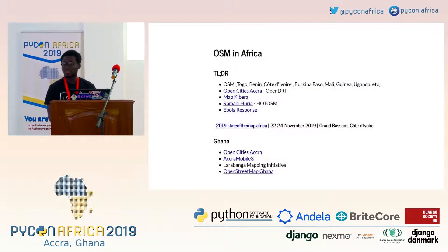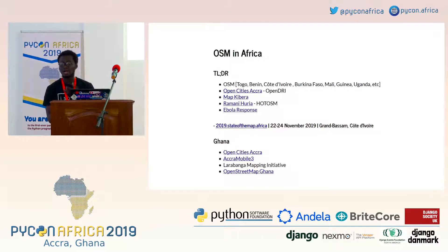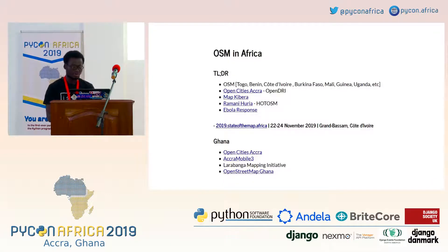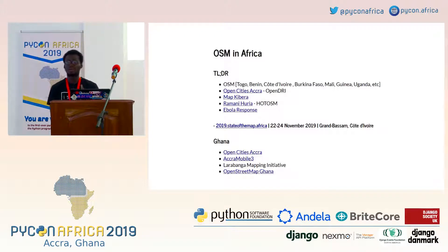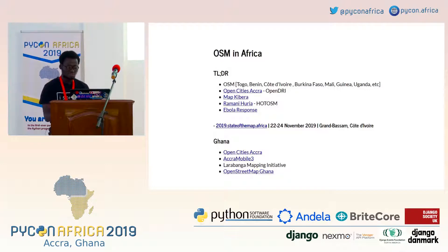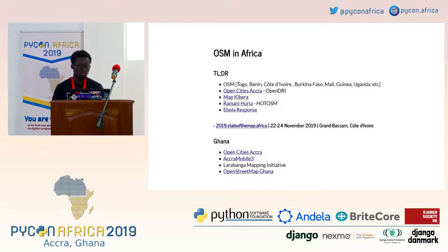OpenStreetMap in Africa — it's a community, just like how we have the Python community, Wikimedia, and others. Several projects are going on in Africa and across the continent. And this year there is also going to be State of the Map — like we have PyCon Africa and Codivoy right here. So you can check it out and see what you can get from it.